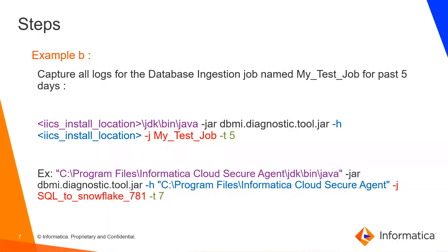Let's now see how to collect the logs using Example B. Example B captures all the logs for a database ingestion job along with the service logs. Here is the command. You need to replace the IICS installation location with your secure agent home directory in both places. You need to replace -J with the job name for which you need to collect the logs. A point to note: the job name contains the task name appended with a number. -T mentions the number of days for which you need to collect the logs. I need to collect logs from the past seven days, so I have mentioned -T 7.